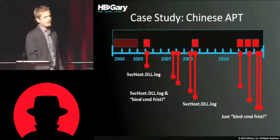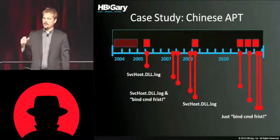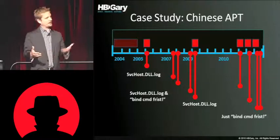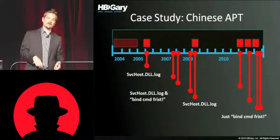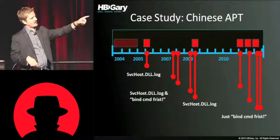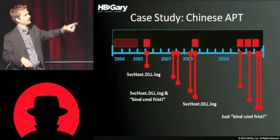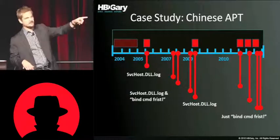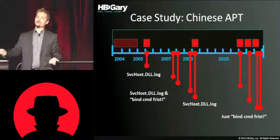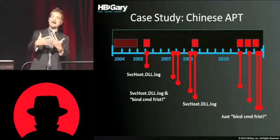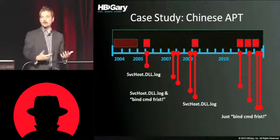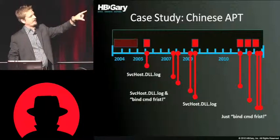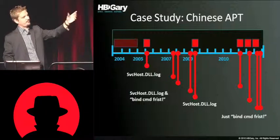Switching to a case study: we have a group of attackers who have been attacking DOD systems for over five years. Back in 2005 we were responding to a US Army related incident, and 'servicehost.dll.log' was one of the strings inside the malware. In 2007, we had several others with that string plus 'bind command frist' — note the misspelling of 'first' as 'frist'. Late last year, another sample had 'servicehost.dll.log'. Just in March of this year, another one didn't have the servicehost string but did have 'bind command frist'. So you start to see these connections over time — a single attack actor reusing the same code artifacts across years.